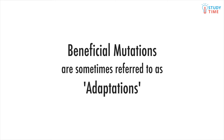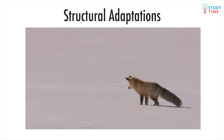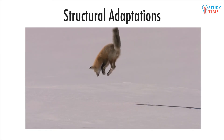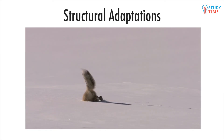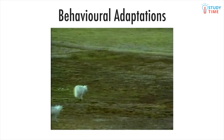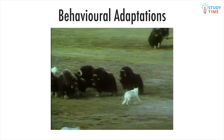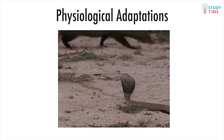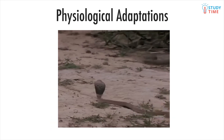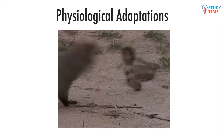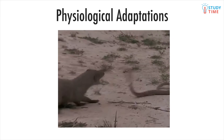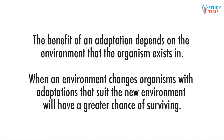Beneficial mutations are sometimes referred to as adaptations. There are three types of adaptations: structural — for example, fur helps warm-blooded mammals conserve body heat and survive cold environments; behavioral — for example, animals that hunt in packs are able to kill bigger prey for more food; and physiological — for example, animals that are able to produce poison or digest difficult food sources.